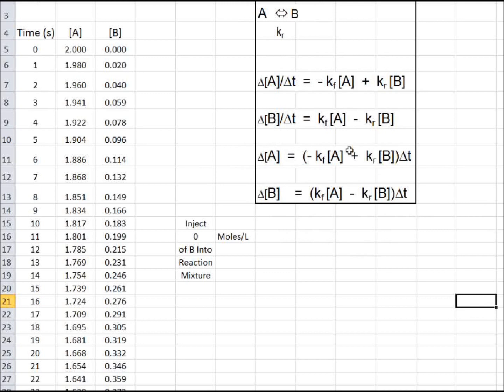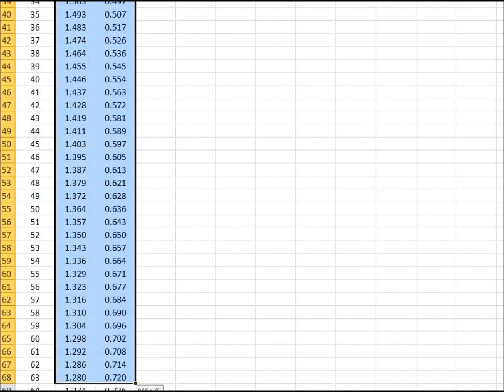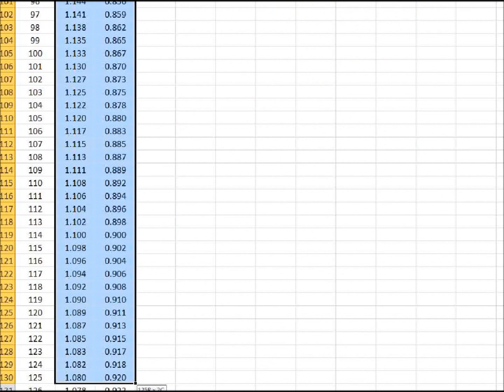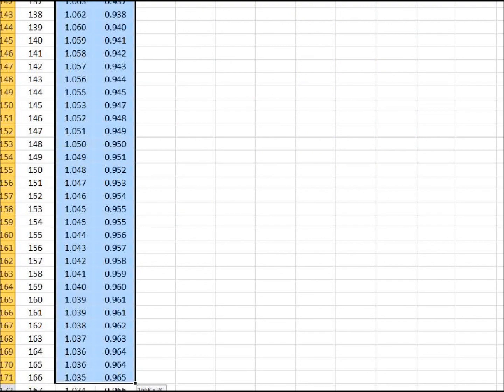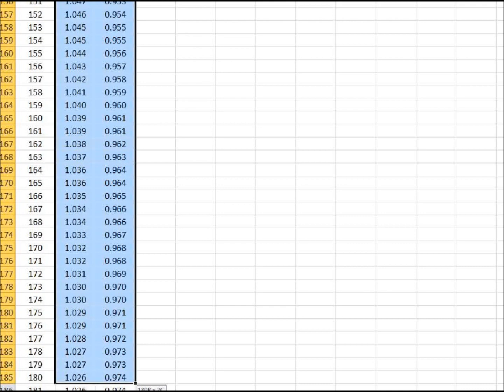All right, I'm going to start with the rate constants of 0.01 and 0.01 seconds to the minus one. So the rate constants are the same. The equilibrium constant should be one. I'm going to start at two molar A and zero B, and I want to show you how I program it.